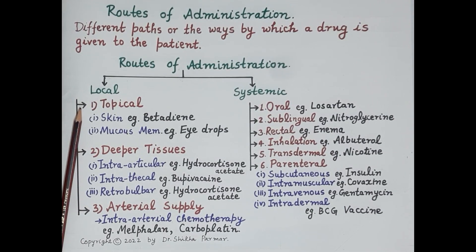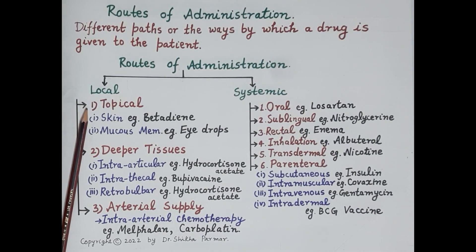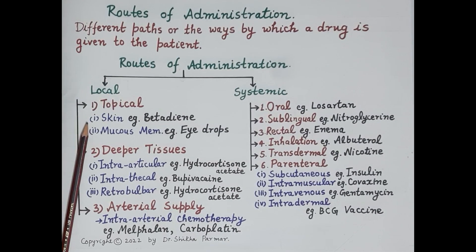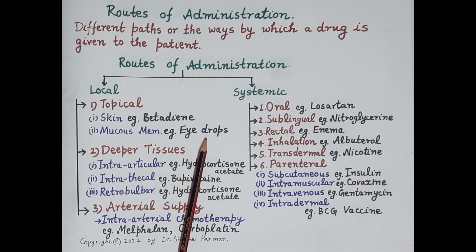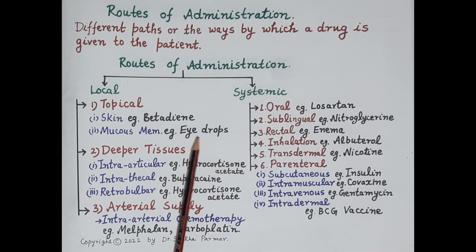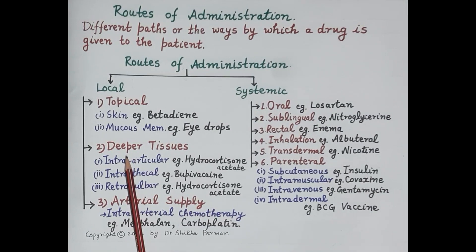Topical administration is the application of a drug to a body surface for local action. This includes application of the drug directly on the skin — for example, Betadine — or on the mucous membrane. A very good example of a drug applied on the mucous membrane is eye drops, where the drug is absorbed from the mucous membrane of the eye, such as eye drops to prevent dryness or itching in the eyes.